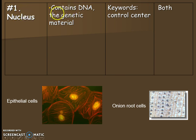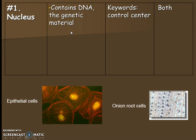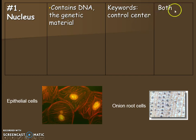The nucleus is where the DNA is, and it's also where we consider there to be a lot of genetic information or material. For your notes you're going to fill in the blanks in the job or function area. You'll want to fill in any missing keywords — sometimes they're there but would be good to highlight. Check whether it's listed as animal or plant; here it's listed as both.